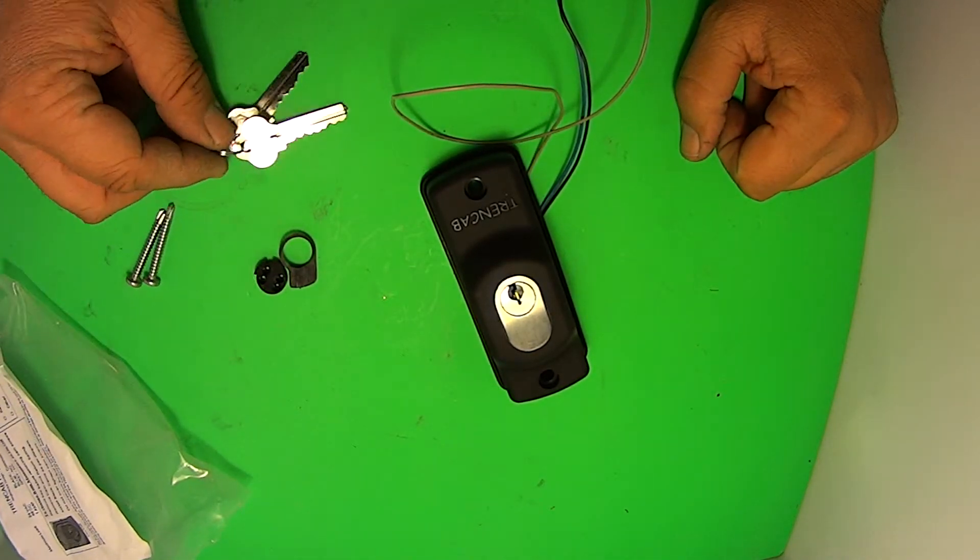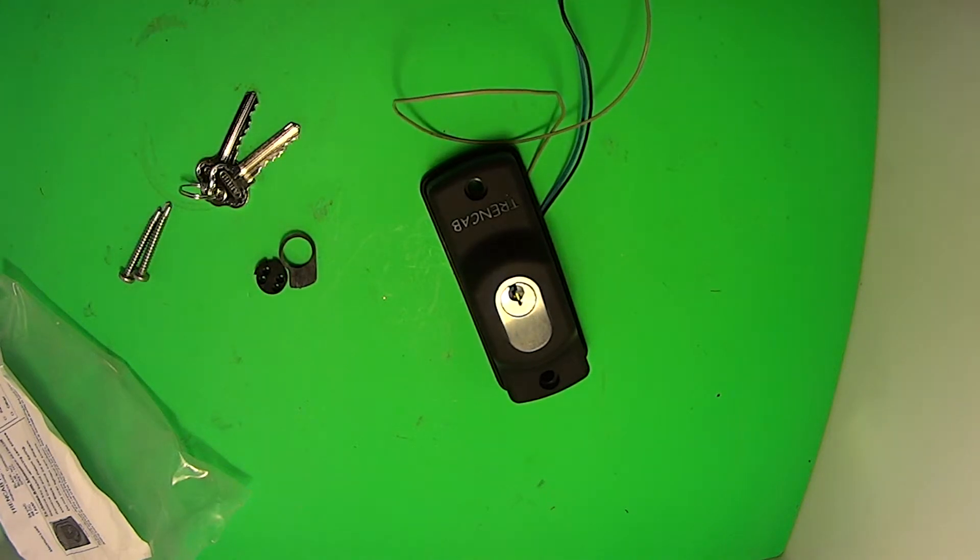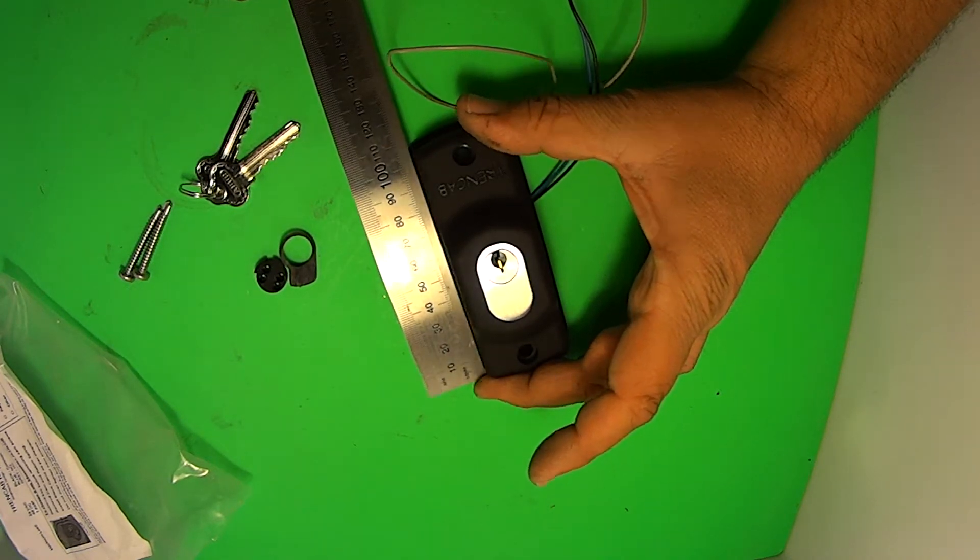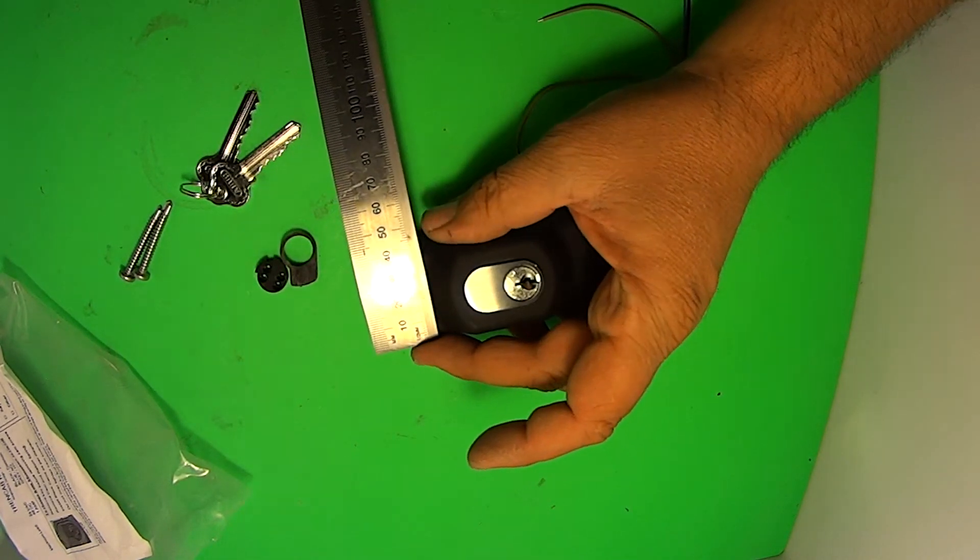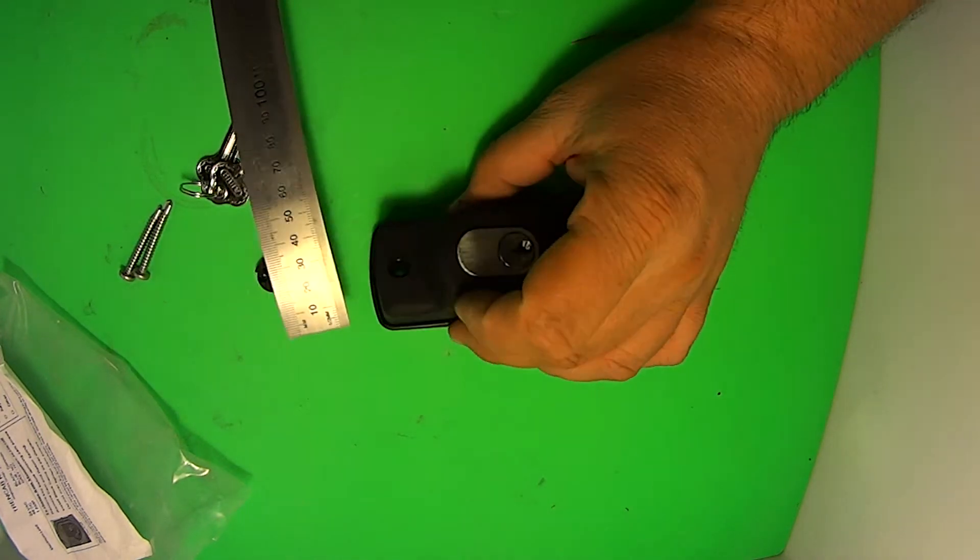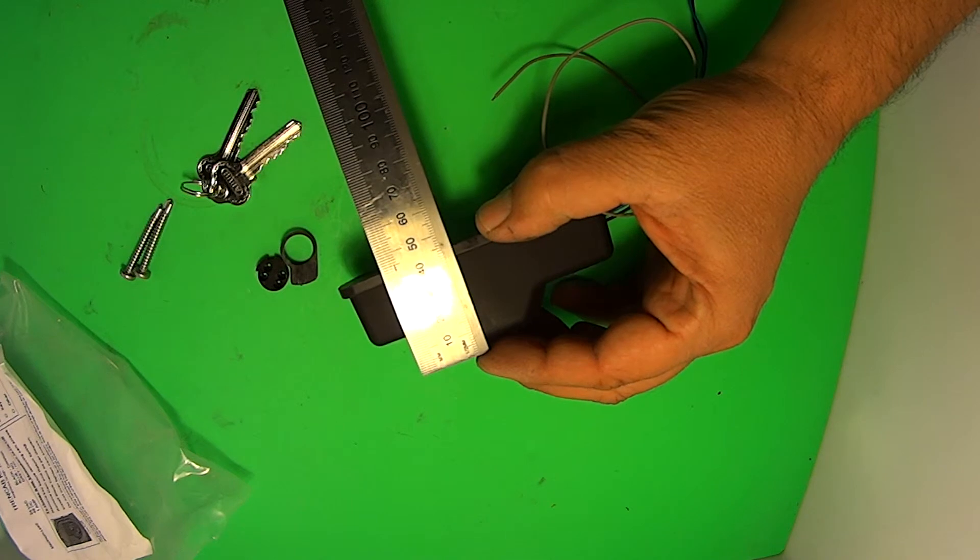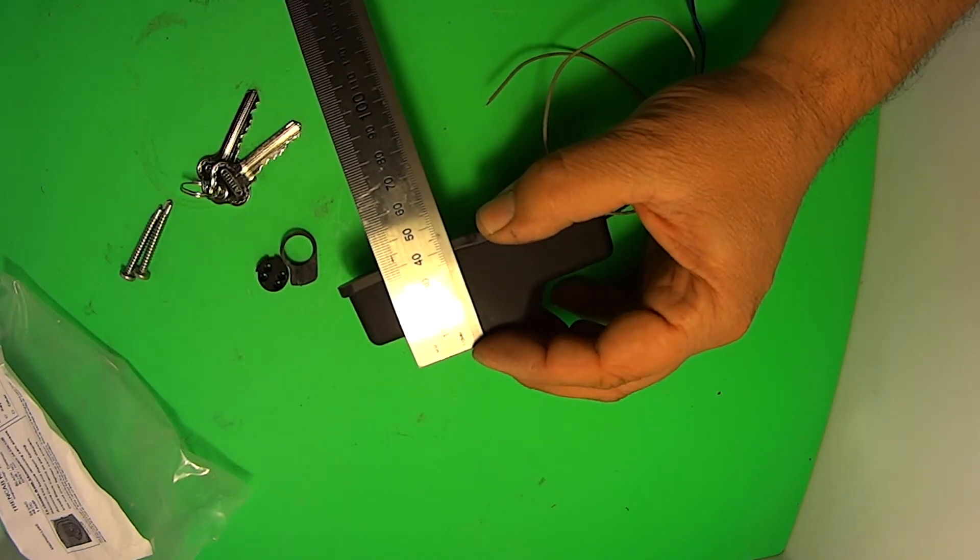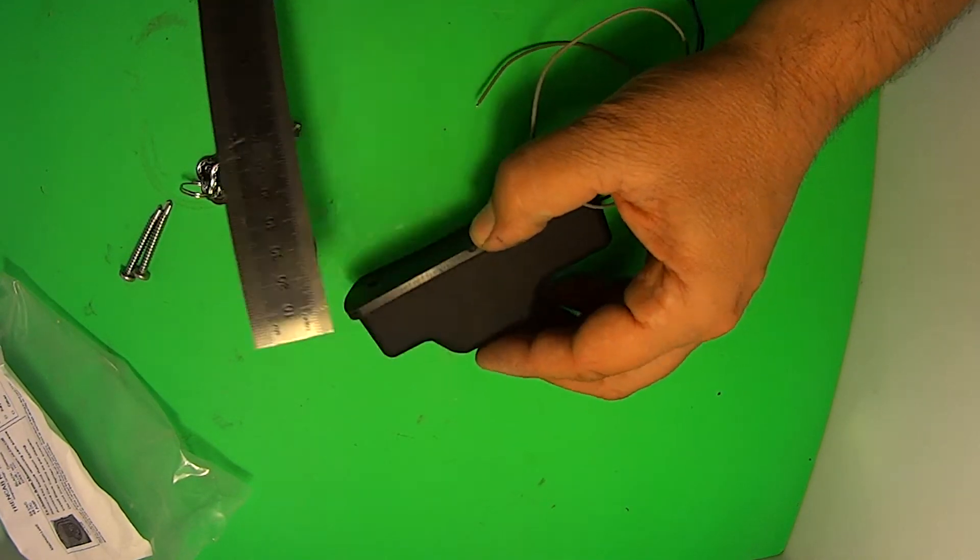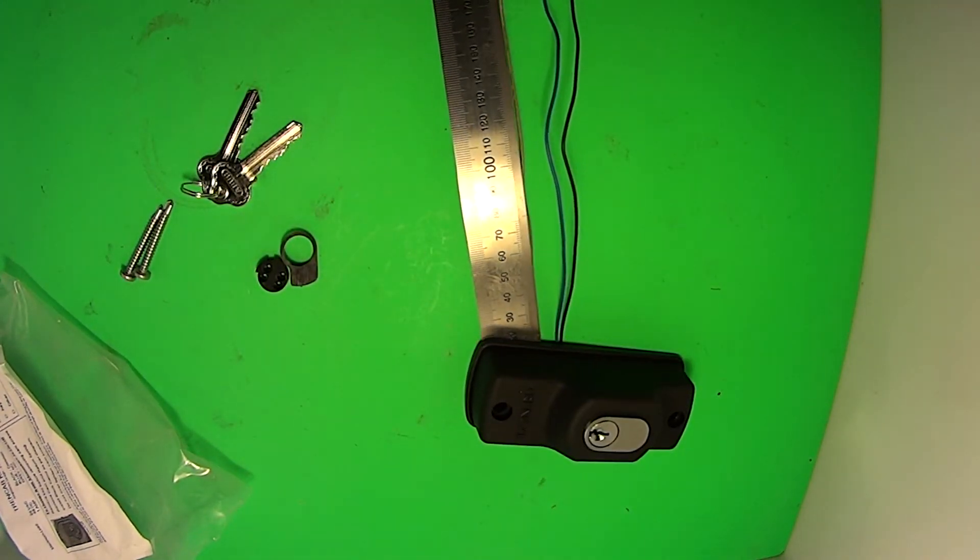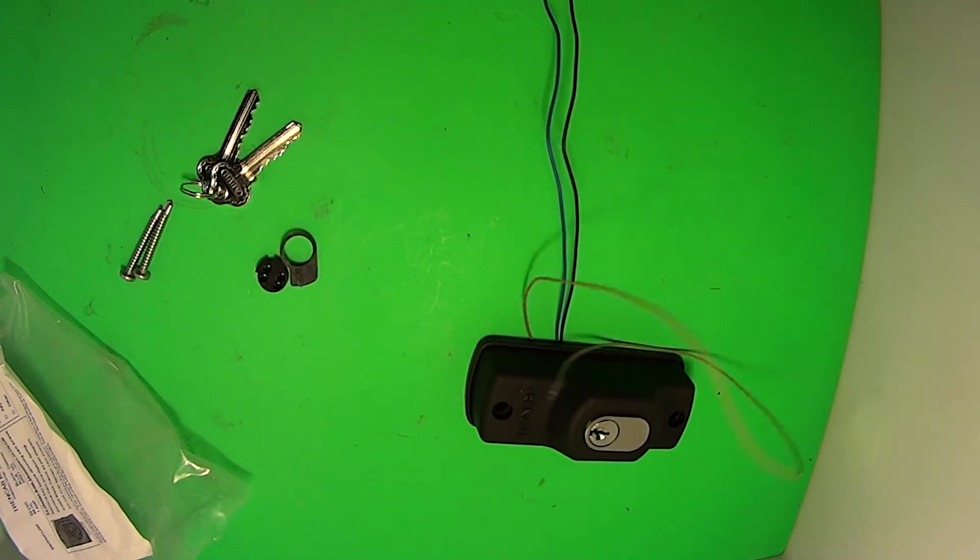The length of this right here is about 105 millimeters. Across, you're looking about 40, probably about 45 including the rubber boot. Projection, including the cylinder, you're looking about 45. Without the cylinder, you're looking about 40. The length of the wires that come standard is approximately 450.